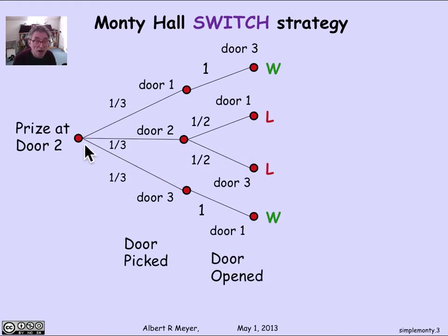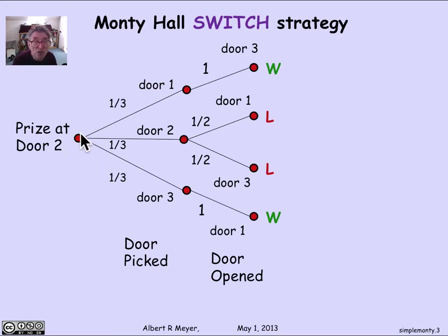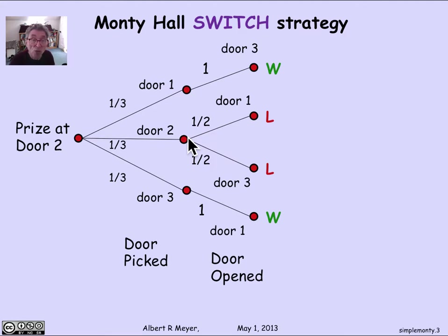Here's the same tree where we're starting off assuming the prize is at door two. The door pick can be door one, door two, or door three, and the door opened can be door three, door one, door three, or door one, according to the constraints on Carroll. A better way to understand this tree is to reformulate the model by saying: wherever the prize is, there are three possibilities — the contestant picks the door where the prize is, or they pick a door one step away, or a door two steps away in some circular arrangement.